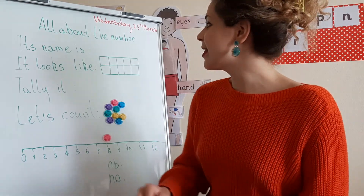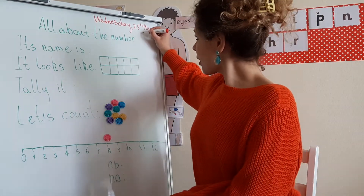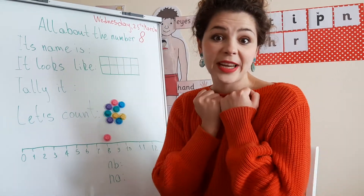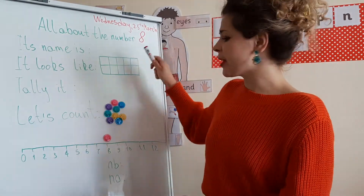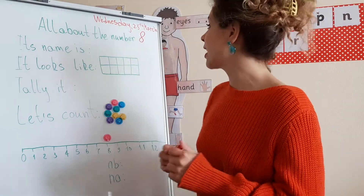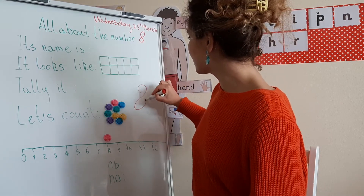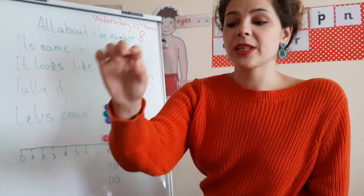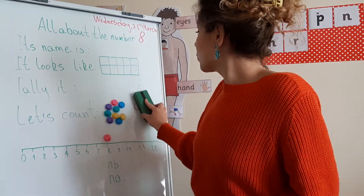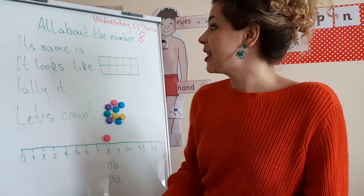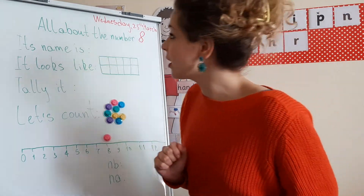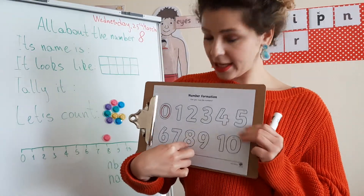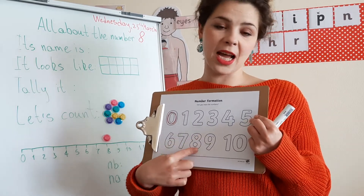So today we're learning all about number eight. I'm going to write it here. Remember, today you are supposed to practice tracing the number, and it's very important that you use as many colors as possible for number eight, because it is sometimes a little bit tricky to write — it's a very curvy number. So I really need you to use all your colors when tracing this number.